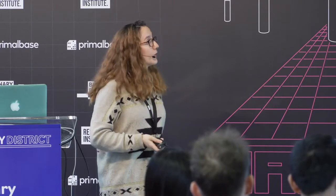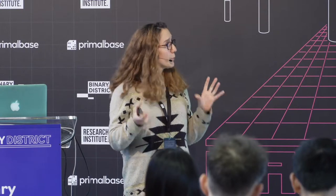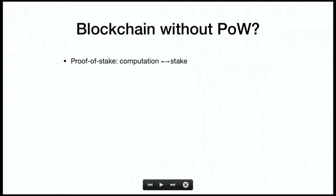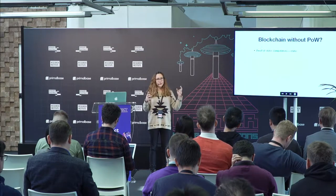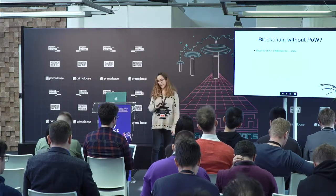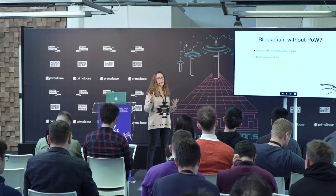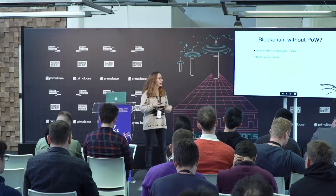Could we have the same guarantees as Bitcoin without these problems — a blockchain without proof of work? One of the main protocols studied in the research community is called proof of stake. The idea is: if proof of work elects a leader based on computational power, proof of stake does the same except you get the right to create a block based on your amount of stake or coins. If you have 100 Bitcoin you are more likely to be elected leader than someone with 10 Bitcoin. Blocks can be created faster because we don't need the 10-minute proof of work.